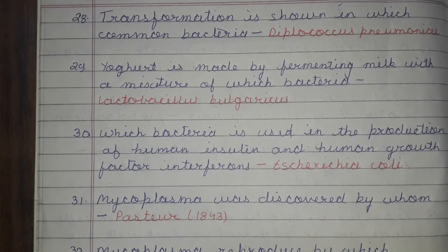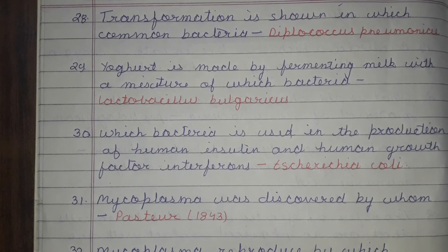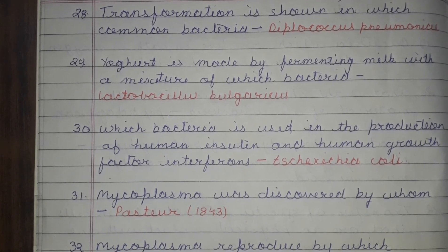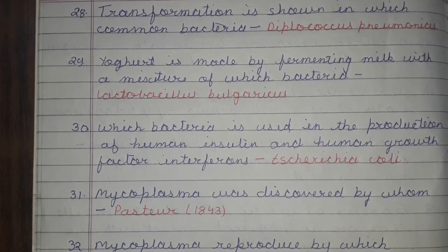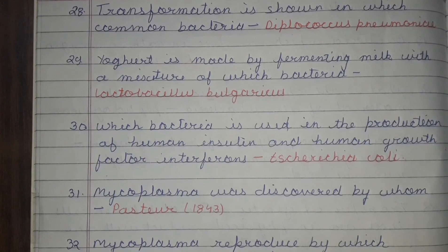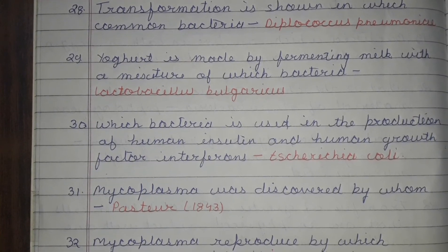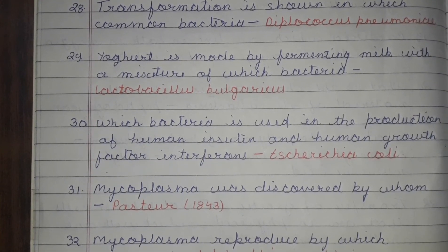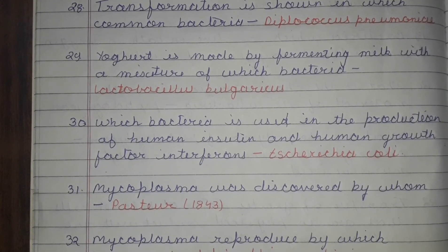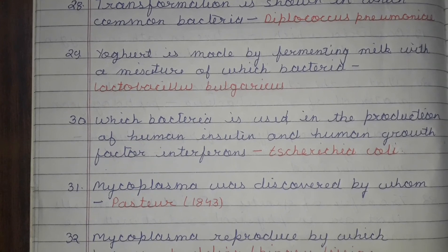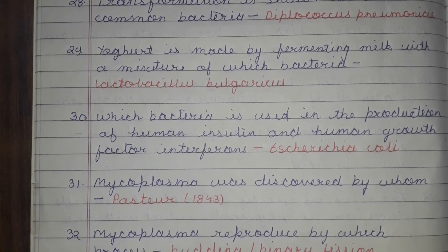Yogurt is made by fermenting milk with a mixture of which bacteria? It is Lactobacillus bulgaricus. Which bacteria is used in the production of human insulin, human growth factor, and interferons? It is Escherichia coli.